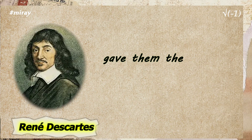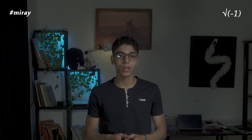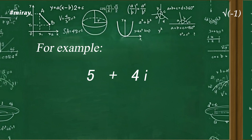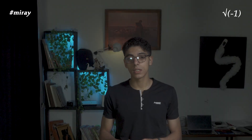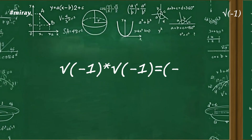Later, René Descartes gave them the name imaginary numbers, represented by the letter i. From this, mathematicians built the system of complex numbers, each number having a real part and an imaginary part. For example, 5 + 4i — here, 5 is the real part and 4i is the imaginary part. The rule is simple: every time you see i times i, you replace it with negative 1, because the square root of negative 1 times the square root of negative 1 equals negative 1.